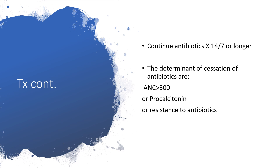We continue antibiotics for 14 days or longer. If ANC is greater than 500 cells per microliter, or procalcitonin indicates we are winning, or confirms it is viral rather than bacterial, we adjust accordingly. If there is resistance to the current antibiotics, procalcitonin will give us the clue. We then stop that antibiotic, review the MCS sensitivity and susceptibility results, and pick another antibiotic to which the organism is susceptible.